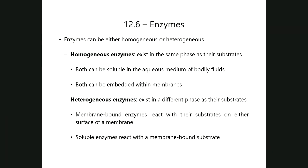Enzymes can be either homogeneous or heterogeneous. A homogeneous enzyme exists in the same phase as its substrate — both soluble in the aqueous phase (inside or outside the cell), or both embedded within a membrane. As long as they coexist in the same medium, the enzyme is said to be homogeneous. A heterogeneous enzyme exists in a different phase from its substrate.